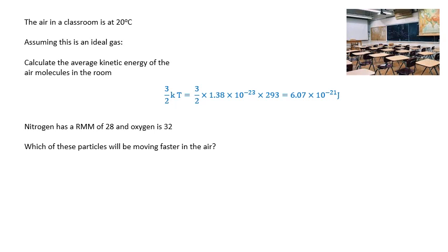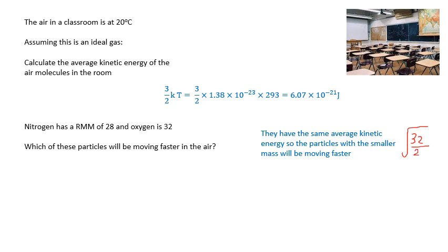Now, nitrogen, N2, has got a relative molecular mass of 28. Oxygen's got a relative molecular mass of 32. Which of those particles will be moving fastest in the air? Will they have the same average kinetic energy? Which ones will be moving faster? And the answer is, well, they've got the same average kinetic energy because it's at the same temperature. And we know that the average kinetic energy, it only depends on the temperature. However, we know that the nitrogen molecules will be moving faster. If they've got the same kinetic energy, then the lighter molecules, the ones with the smaller mass, will be moving faster. They'll actually be moving faster by a factor of root 32 over 28. Won't they? Yeah? And you should be able to figure out why I said that.